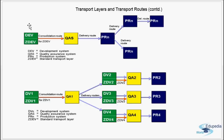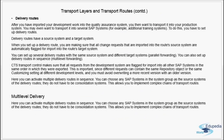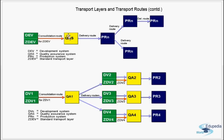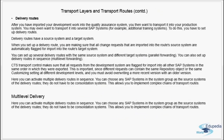Delivery routes have a source system and a target system. When you set up a delivery route, you are making sure all the change requests that are imported into the route's source system are automatically flagged for import into the route's target system. The consolidation route is set up in the system landscape for a transport layer. For a delivery route, whatever change request is imported into the source system — that is the QA — is automatically assigned a target system, which is generally the production system.